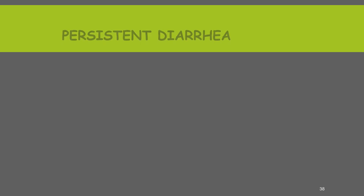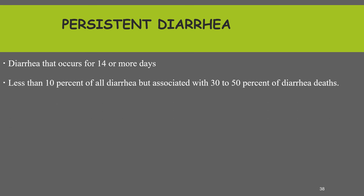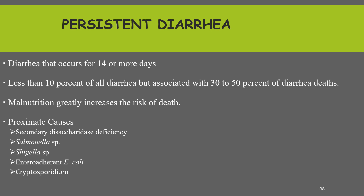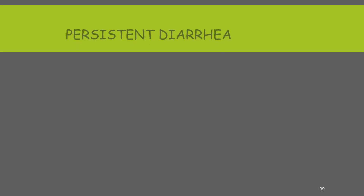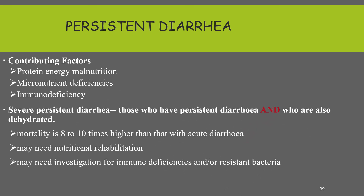As soon as the child regains consciousness, stop the IV drip and treat the child orally or by nasogastric tube with 10 ml per kg per hour of ReSoMal. Regarding persistent diarrhea — diarrhea lasting more than 14 days — it accounts for less than 10 percent of all diarrhea but is associated with 30 to 50 percent of diarrheal deaths. Malnutrition greatly increases the risk of death from persistent diarrhea. Possible causes include secondary disaccharide deficiency and infectious causes such as Salmonella, Shigella, and enteropathogenic E. coli. Contributing factors include protein-energy malnutrition, micronutrient deficiency, and immunosuppression. Severe persistent diarrhea means persistent diarrhea with dehydration — mortality is high and it needs nutritional rehabilitation, rehydration, and investigation for immune deficiency and resistant bacteria.